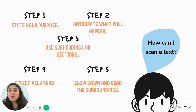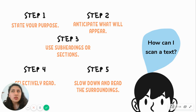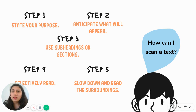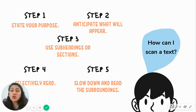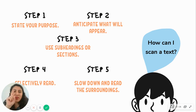Step number two: you can anticipate what will appear and how it will appear. You need to anticipate what's going to appear in the text and how that information will look. For example, if you're looking for a place, it will appear as a proper noun — probably a city or a country. If you're looking for percentages, that information will appear as numbers in the text.